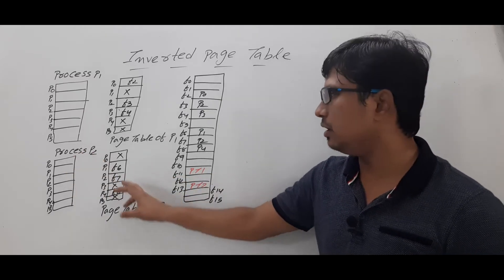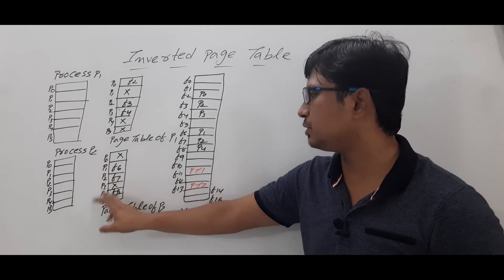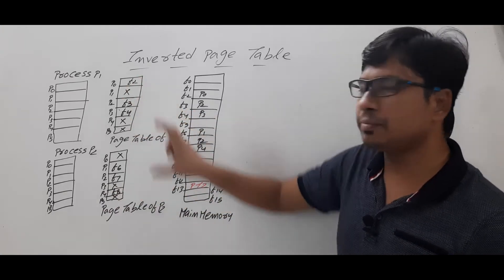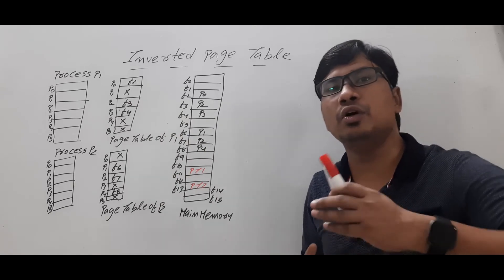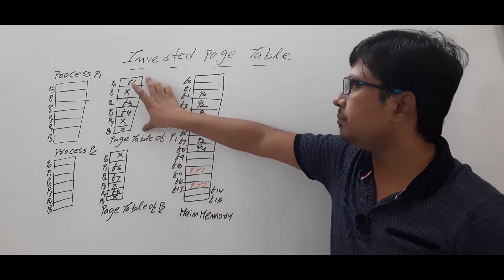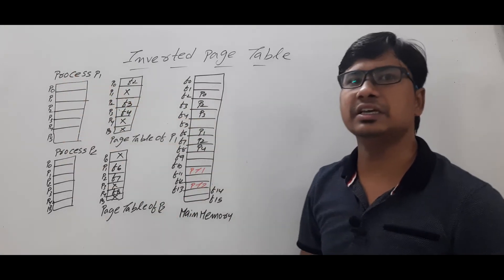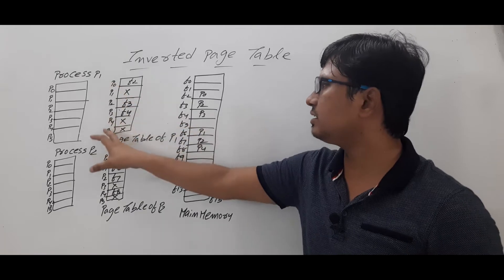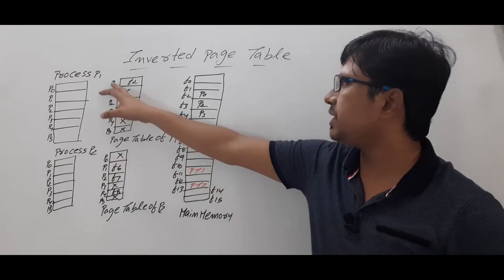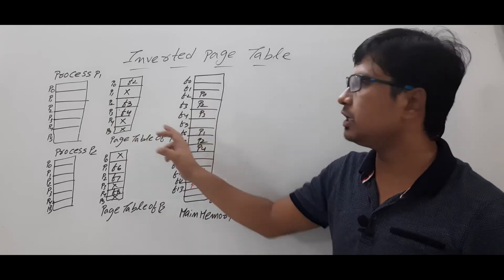Process P2 has its own page table with page numbers zero through three. The size of a page table depends on the number of entries and the size of each entry. The number of entries depends on the number of pages in the process. For process P1, which is divided into six pages, there are six entries — page number zero through page number five.